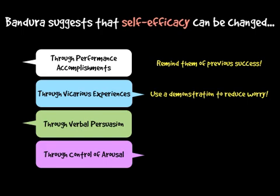For vicarious experiences, we can give them a demonstration. The advantage of a demonstration is we can slow things right down to the pace the learner needs. It could be that they're very nervous about producing a badminton shot because their friends of the same ability are doing it really well. But we can slow the demonstration right down — it could be as simple as just practising the arm drive movement, the follow-through, or just practising in shadow.